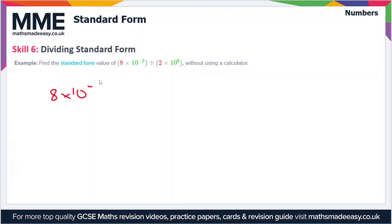Let's just rewrite this as a fraction. We have 8×10⁻⁵ over 2×10⁶. I'm writing this as a fraction because we can split it up easier, so we've got 8/2 times 10⁻⁵/10⁶.